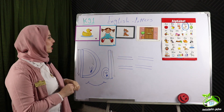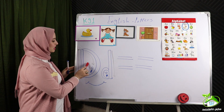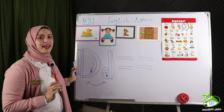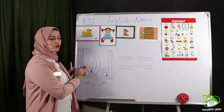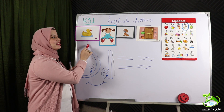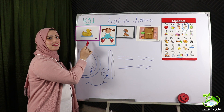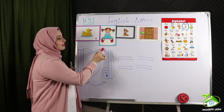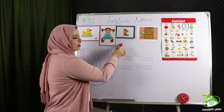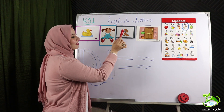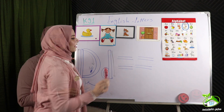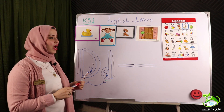One more time, repeat after me — D makes sound da, da, da. Excellent! KG, D is for what? Duck, duck, duck. Doll, doll. Dog, dog. Door, door.